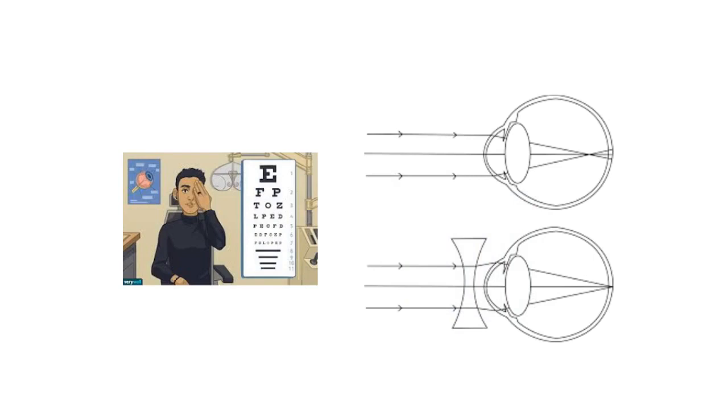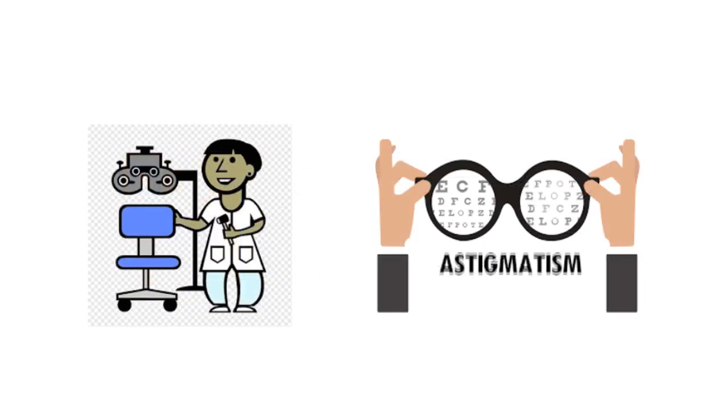To simply understand, in a traditional eye test spherical lenses are used to correct nearsightedness or farsightedness, whereas cylindrical lenses are needed to correct astigmatism.